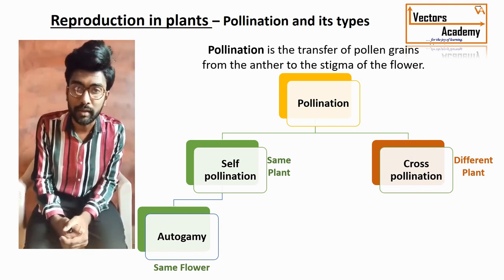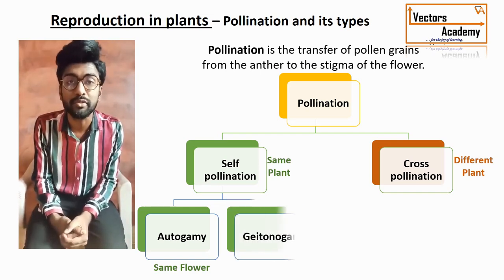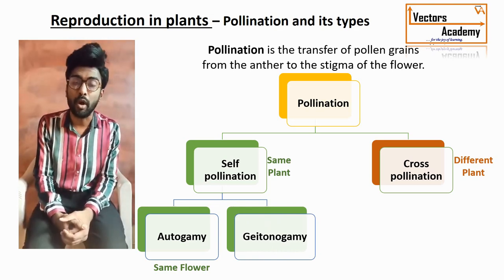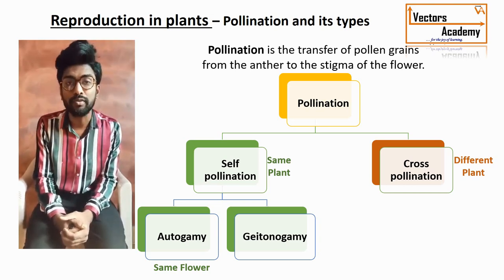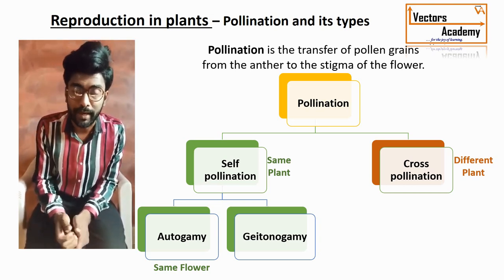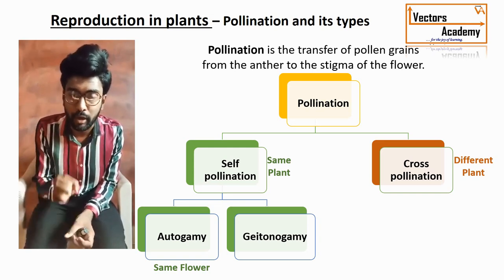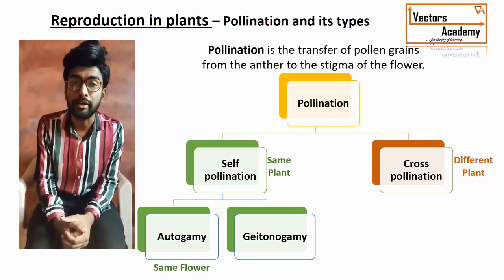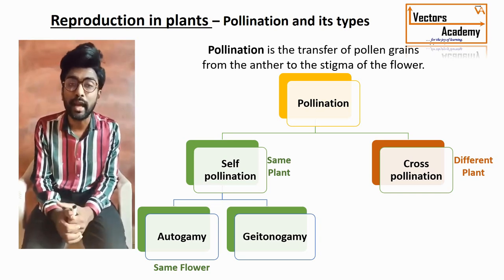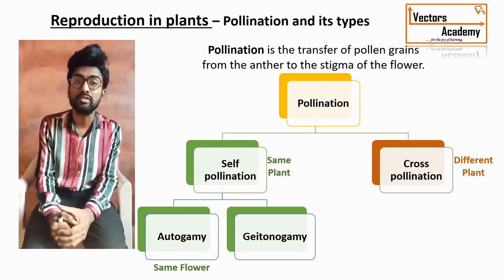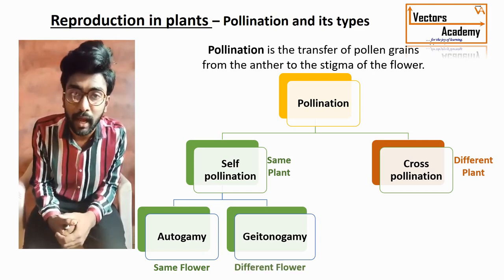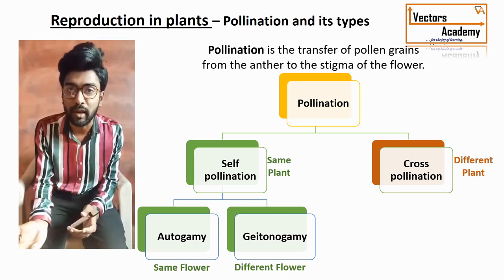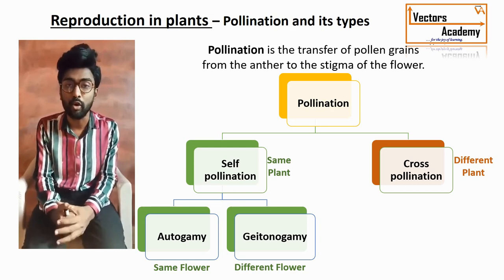Self-pollination or autogamy is of two important types. The first is autogamy: the transfer of pollen grain from anther to the stigma of the same flower of the same plant. The second is geitonogamy — 'geitono' stands for neighbor and 'gamy' stands for marriage. Geitonogamy is the transfer of pollen grain from anther to the stigma of another flower but of the same mother plant.